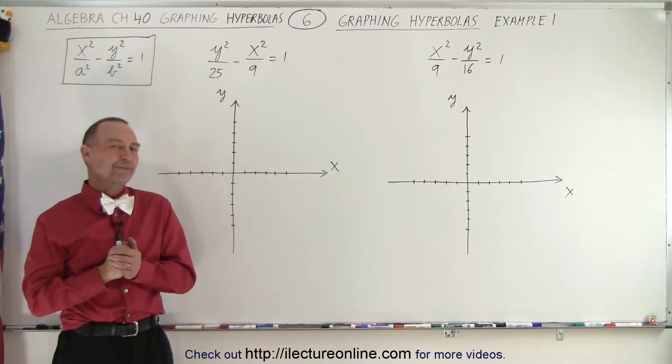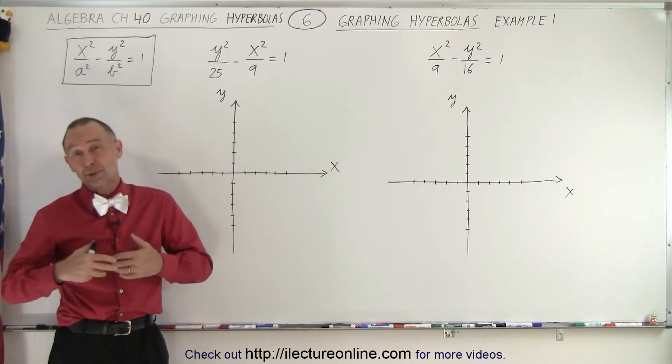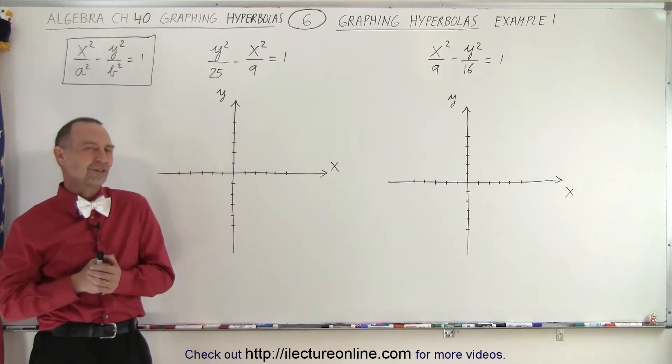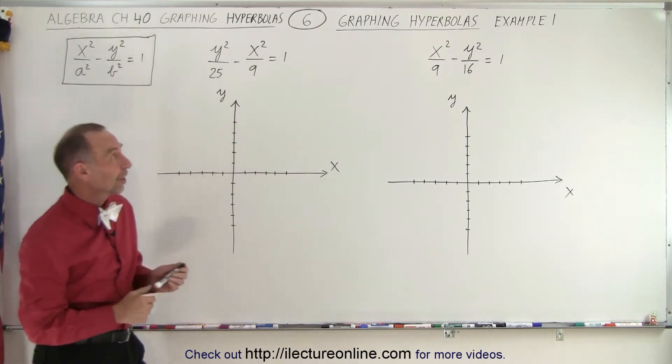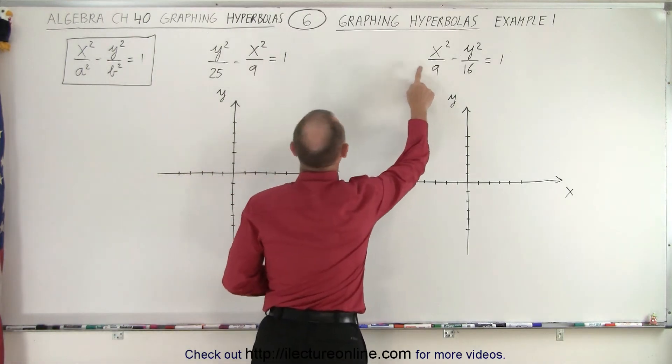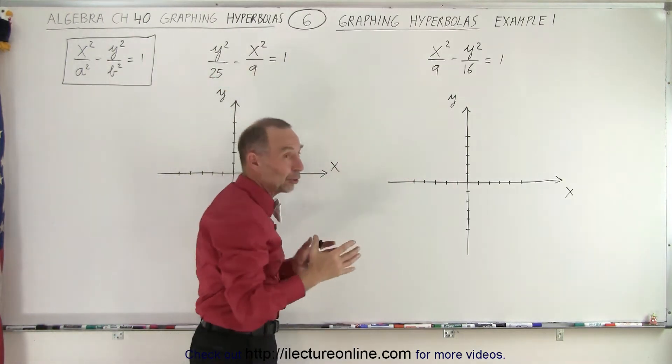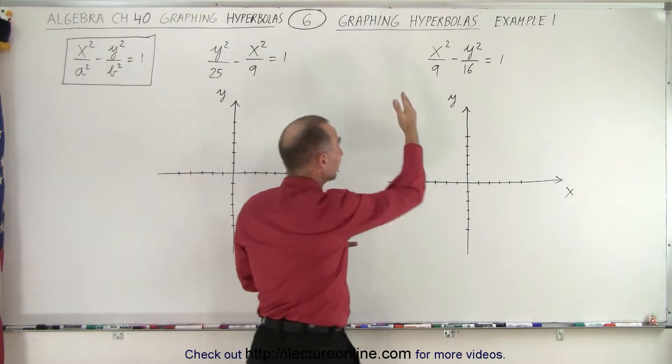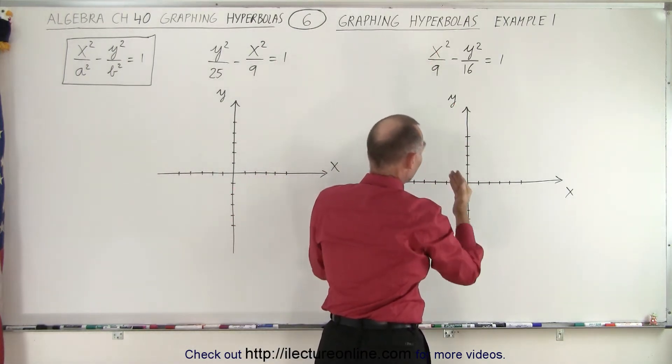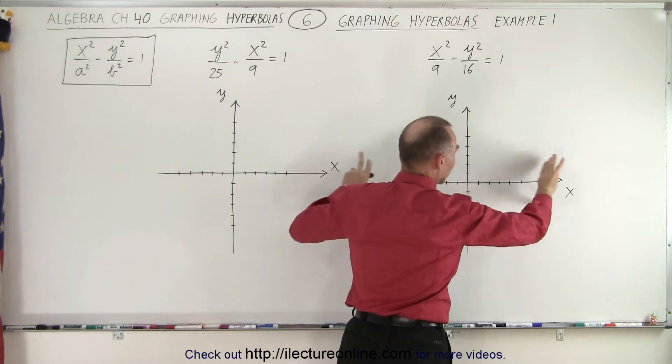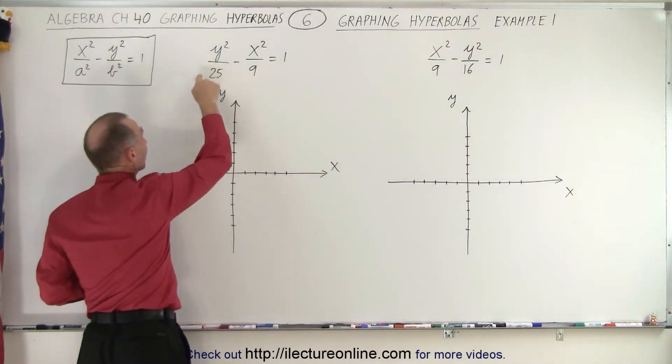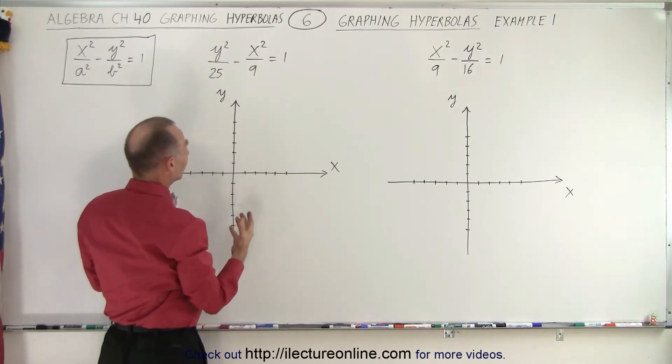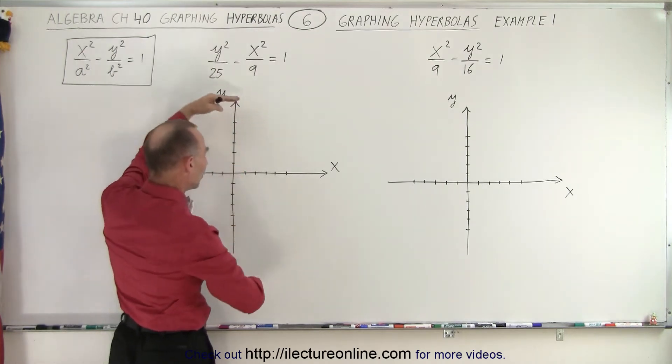Welcome to our lecture online. Now that we understand hyperbolas to some extent, let's try some examples. Let's graph these two equations. Notice that here we have the x in front, here we have the y in front. We already know that when the x is positive, or the first term is an x square over 9, that being positive, we know that the hyperbola opens sideways. And when the y square over b square is positive, then we know that the hyperbola opens up and down.